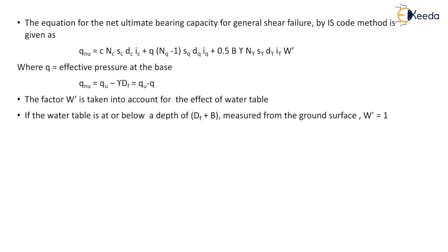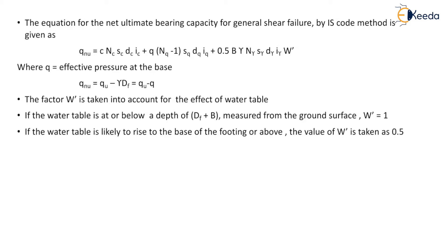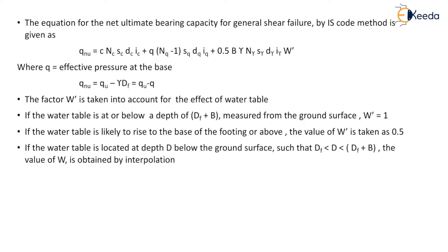If the water table is at a depth of Df + B measured from the ground surface, then W' = 1. If the water table is likely to rise to the base of the footing or above, the value of W' is taken as 0.5. If the water table is located at depth D below the ground surface such that D lies between Df and Df + B, the value of W' is obtained by interpolation.